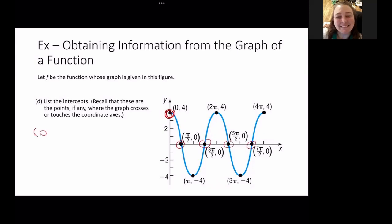All we have to really do is write out this point: π over 2, 0; 3π over 2, 0; 5π over 2, 0; and 7π over 2, 0. We've got your x-intercepts are where your y equals 0, and we have your y-intercept where x equals 0.